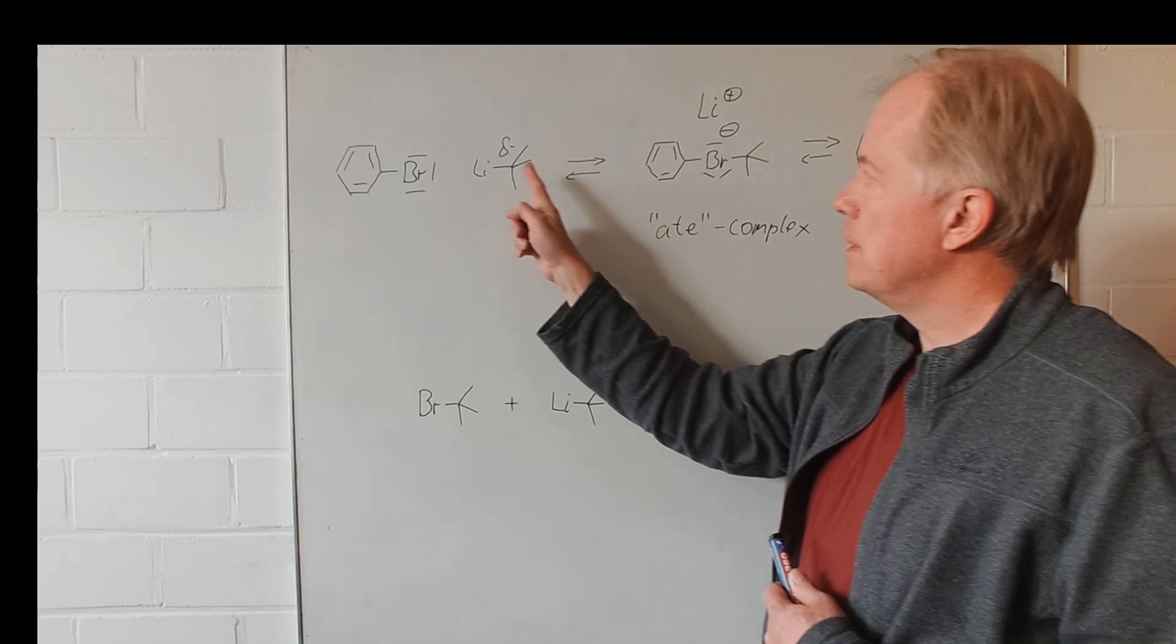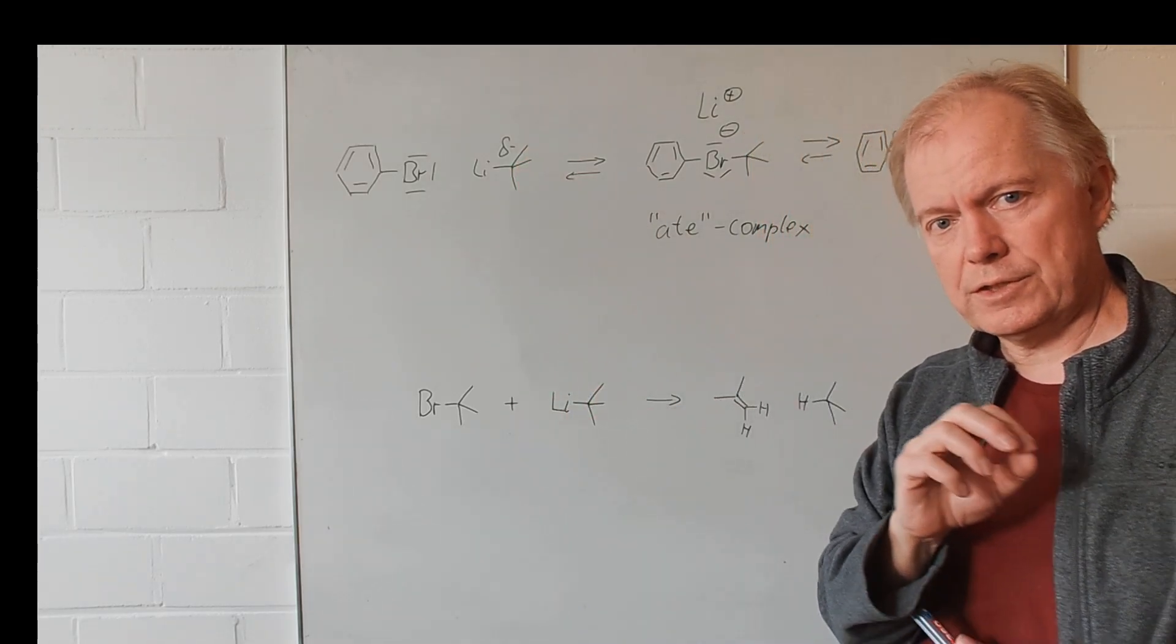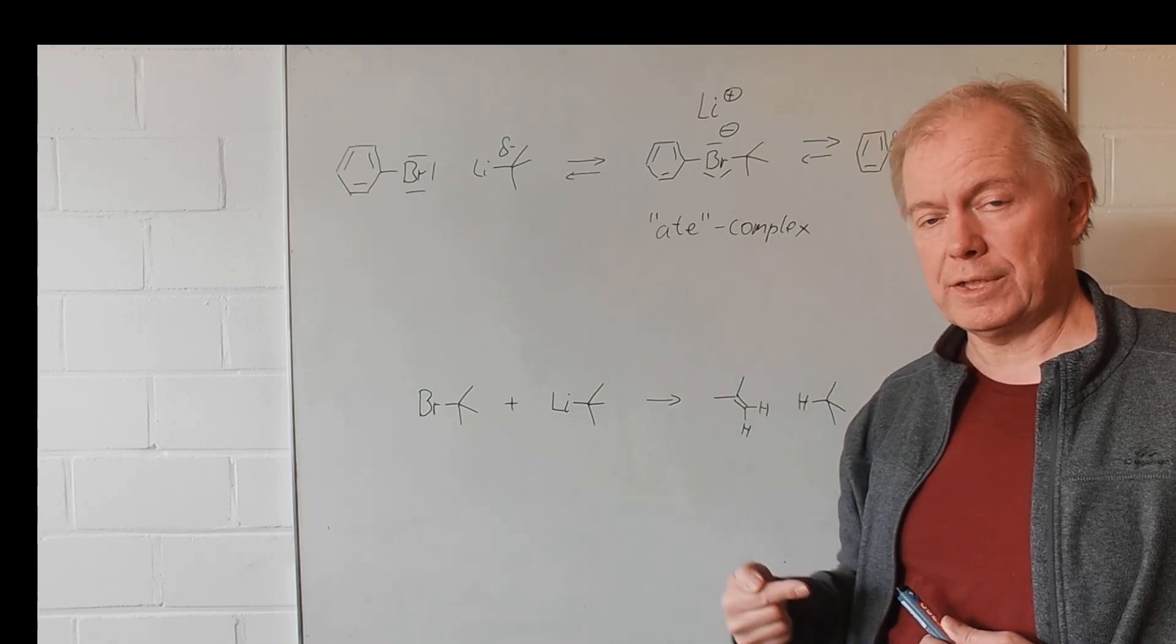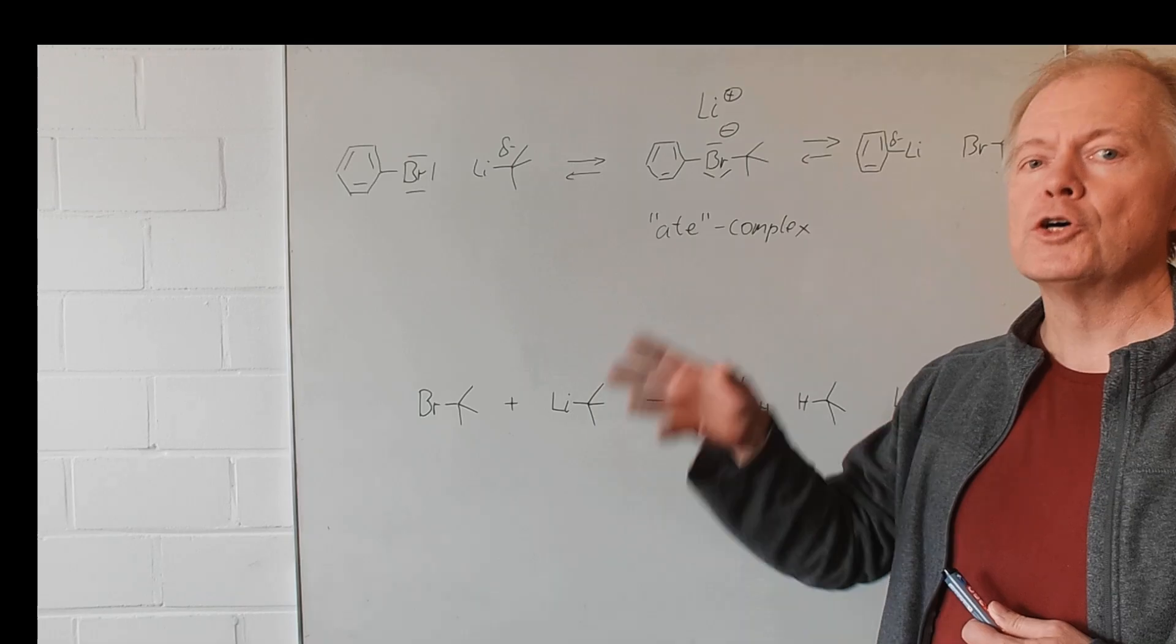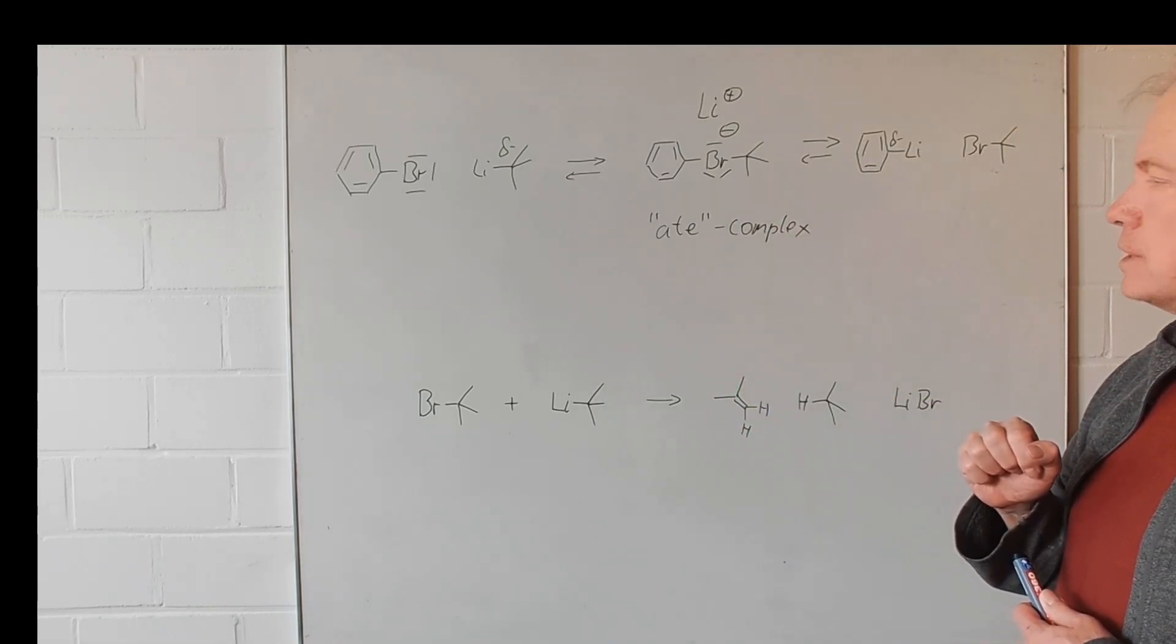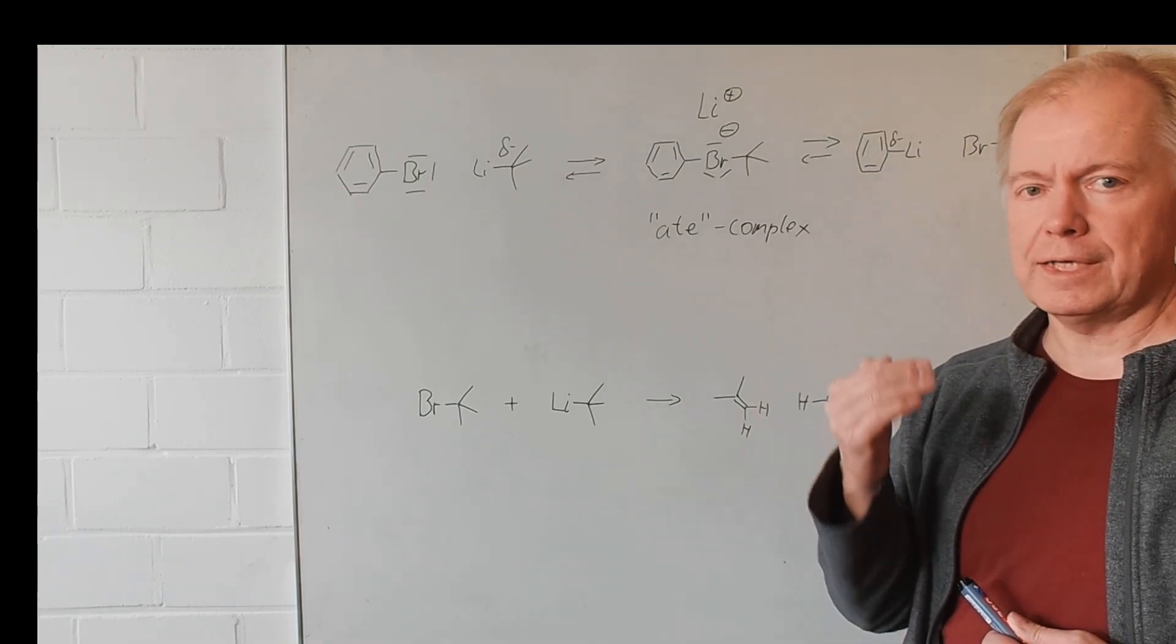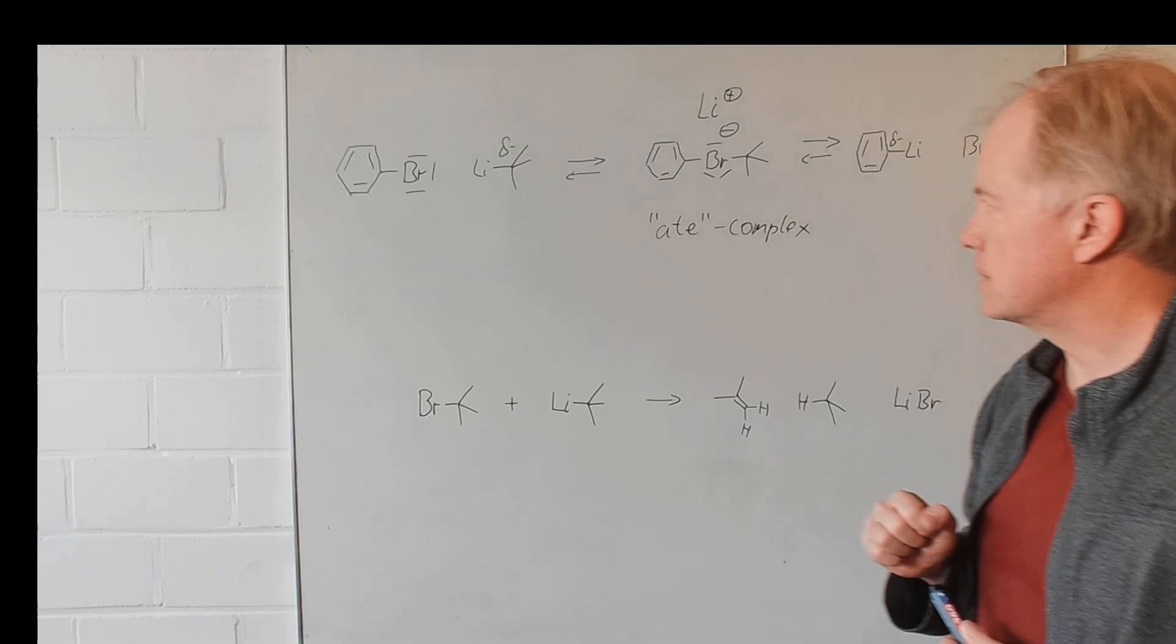Because here the delta minus is at an sp3 hybridized center, whereas here it is at an sp2 hybridized center. At an sp2 hybridized center, a negative charge is better stabilized because it is closer to the atom core. Indeed, an sp2 hybridized carbon is slightly more electrophilic compared to an sp3 hybridized carbon.